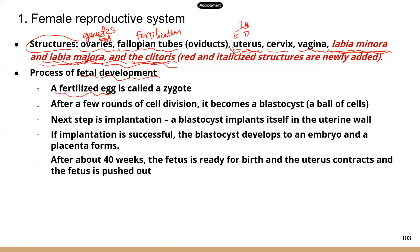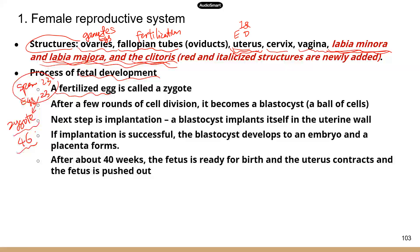A sperm will have 23 chromosomes, and an egg will have the same number, 23. So when they merge, they become a zygote. The zygote will have the unique number of chromosomes for humans, which is 46. So you and me — we all start off as a zygote.